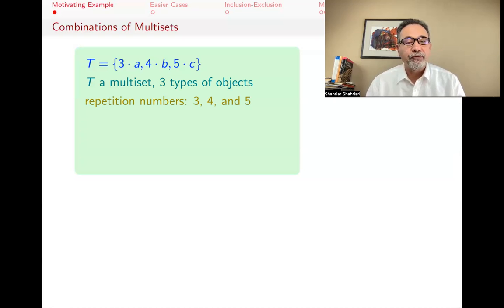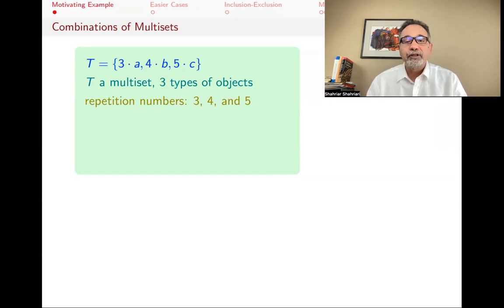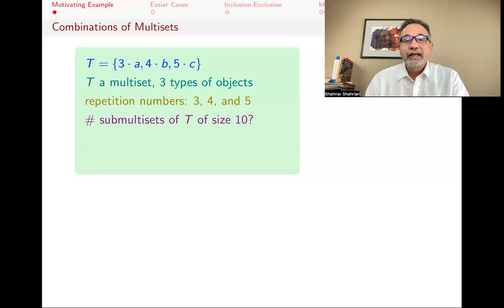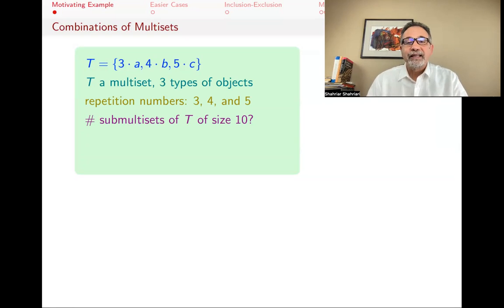There are three copies of A, and those copies of A are all identical. Four copies of B — those are all identical. And five copies of C, which are also identical to each other. And what we want to know, for example, is how many sub-multisets can we find of this set T of size 10?